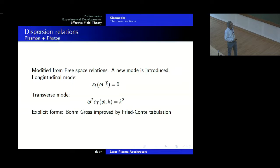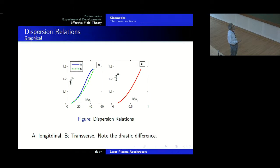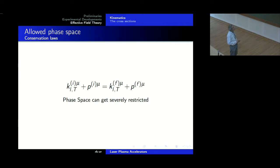The forms we used are Böhm-Gross improved by Fried-Conte tabulation. We could not go beyond that but it was rich enough. Here we have plotted the dispersion relation — one is the longitudinal and one is the transverse. What I want you to notice is that everything is dimensionless, divided by omega_p, the plasma frequency. Please notice that there is quite a drastic difference — not along the y axis but along the x axis. K takes values 20, 40, 60 for the longitudinal, whereas for the transverse it is going from 0 to 1.